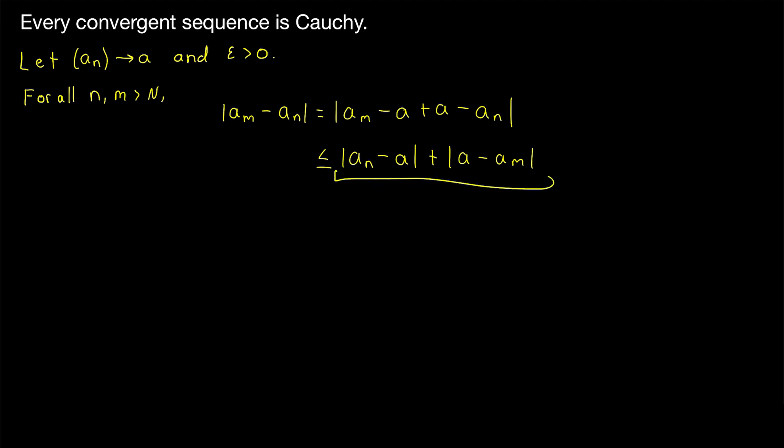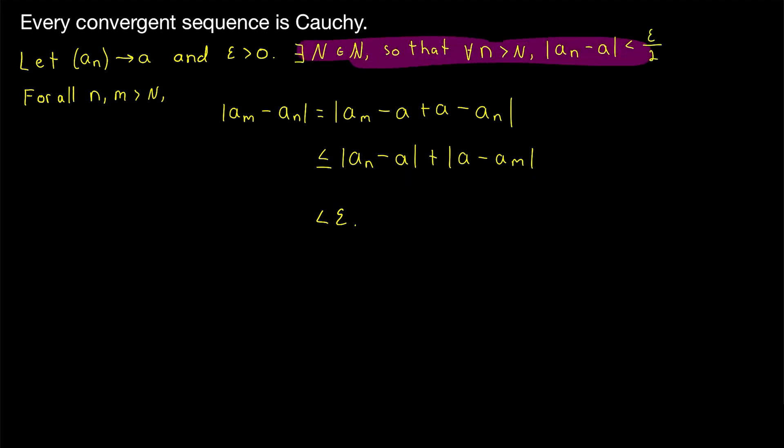Since we would like this sum to be less than epsilon, we just want to make both of these less than epsilon over 2. So this is our missing line.